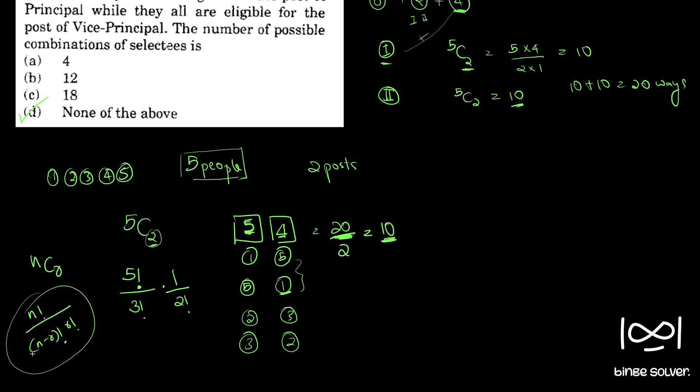How this formula came is what I explained - whenever we want to choose r items from n objects, we use the combination nCr if the order is irrelevant. If the order is relevant then we go with permutation which is nPr. The formula for nPr is n factorial by n minus r factorial.